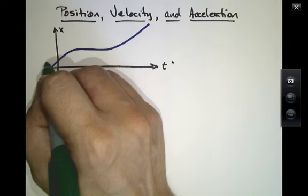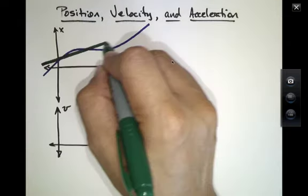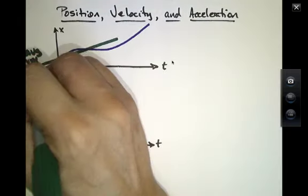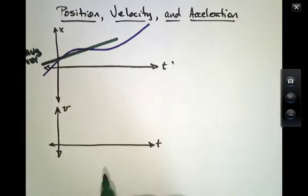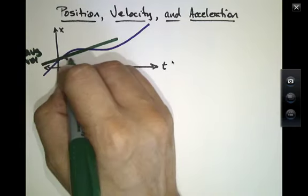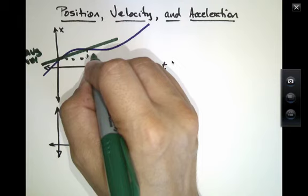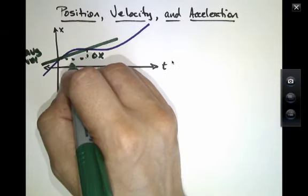We've talked previously about the idea of an average velocity, one which has a certain delta x and a delta t.